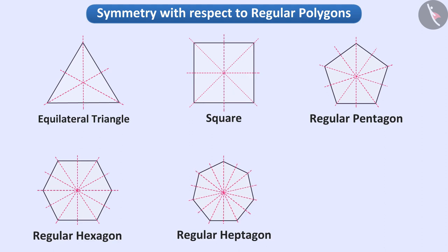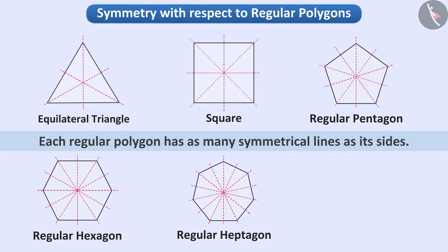Can you understand this pattern and give us a rule so that we can find out how many symmetrical lines there are in a regular polygon? Absolutely right! Each regular polygon has as many symmetrical lines as its sides.